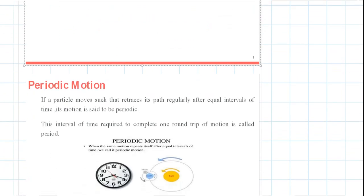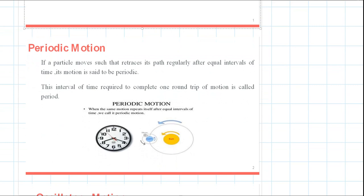What is simple harmonic motion? You should know what is a periodic motion and what is an oscillatory motion. A periodic motion is a particle that moves such that it traces its path regularly after equal intervals of time. Its motion is said to be periodic. The time required to complete one round trip of motion is called the period.